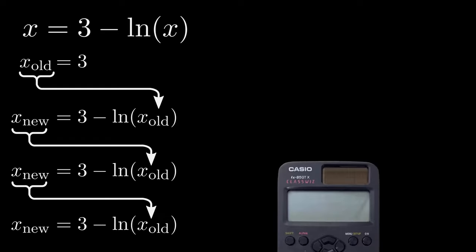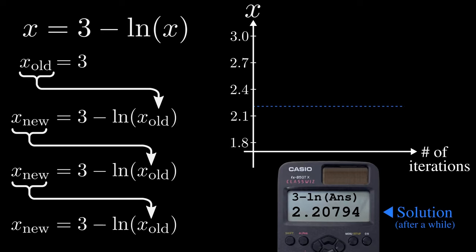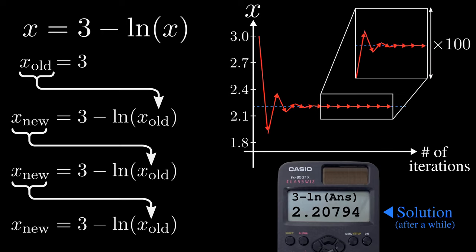This can be done easily on a calculator by setting it up so that the old x is the ans function, that is the answer to the previous iteration, and then just pressing the equals button repeatedly. Starting with x equals 3, after a while it will approach the true solution, bouncing around the correct value. Since it is oscillating up and down, you could try being clever and take the mean of two subsequent iterations to get even closer to the true solution much more quickly.